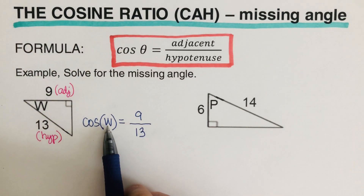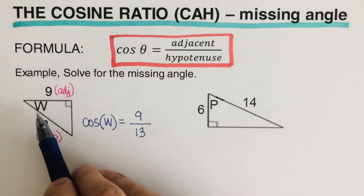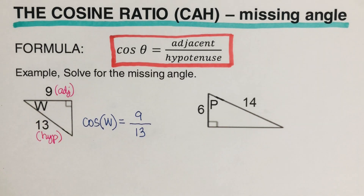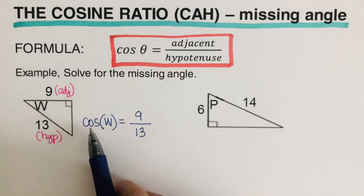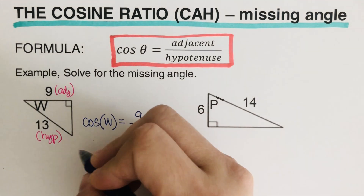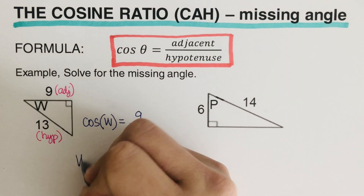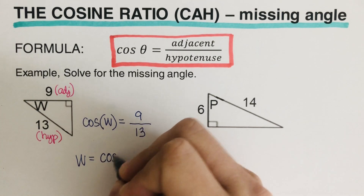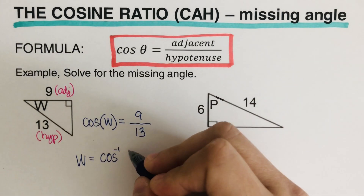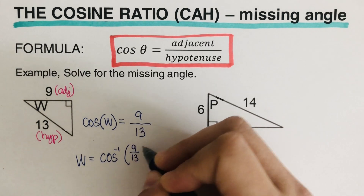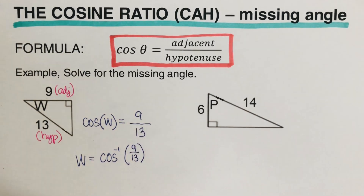We have cosine W, but we want W only — we need to remove the cosine. So what we're going to do is get the inverse cosine, also written as arccos. We write: W is equal to the inverse cosine of the fraction 9 over 13, and then we use the calculator to determine the value.